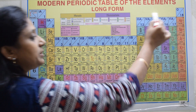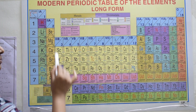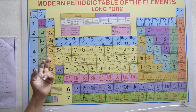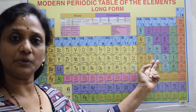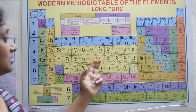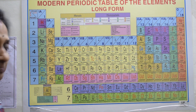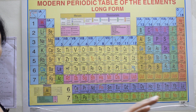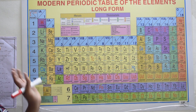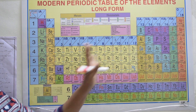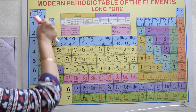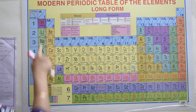Next are inner transition elements, where the incoming electron enters the f orbital. So we have s-block, p-block, d-block, and f-block elements. The s-block elements are called alkali metals in the first group, and alkaline earth metals in the second group.